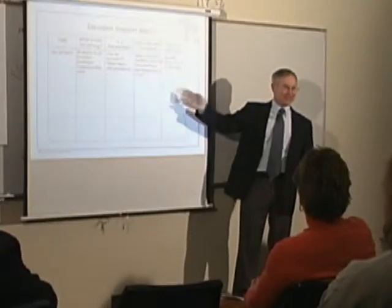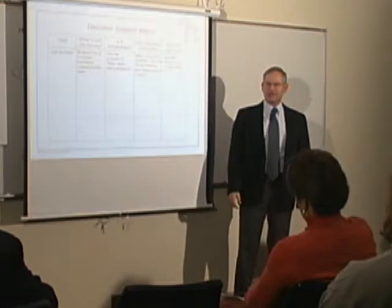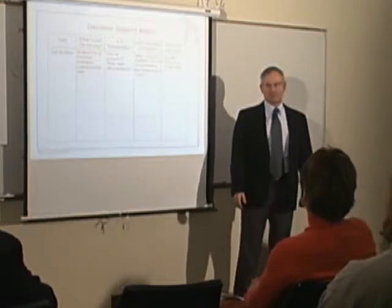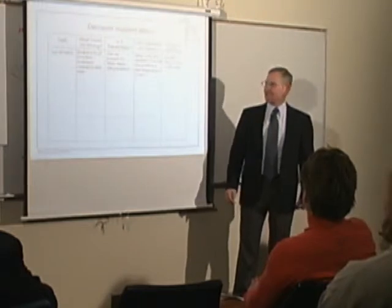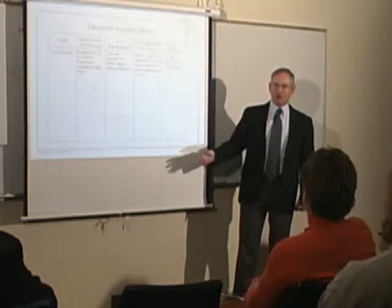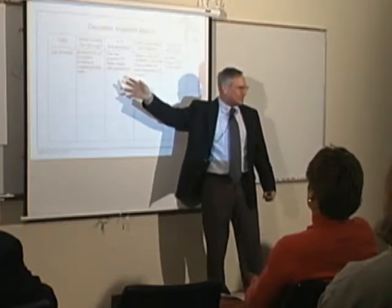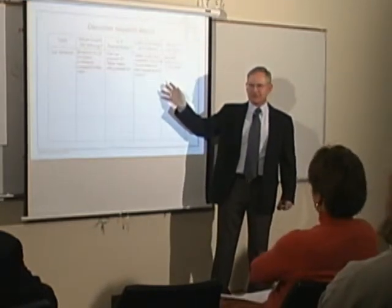Now, how many of you on the project you're currently working on are going to list every single task and go through this drill? If you've got a project of 30 to 40 tasks, that's a no-brainer — of course you should do this. But if you've got a project with 800 to 1,000 tasks, you're not going to get a return on your investment. Even if you only have four problems per task, you're looking at 4,000 problems — it's just not going to be to your benefit.